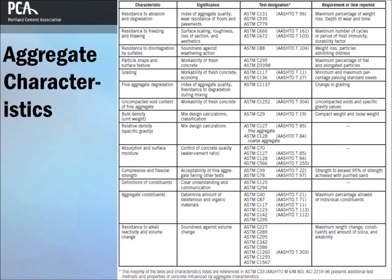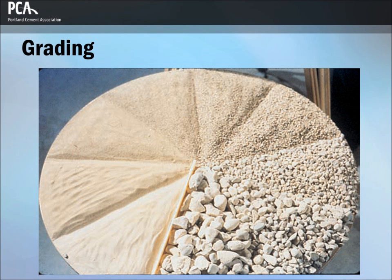The important characteristics of aggregates for concrete are listed here. Normal weight aggregates should meet the requirements of ASTM C33 or AASHTO M6 and AASHTO M80. These specifications limit the permissible amounts of deleterious substances and provide requirements for aggregate characteristics. Service records are invaluable in evaluating aggregates. In the absence of a performance record, the aggregates should be tested before they are used in concrete.